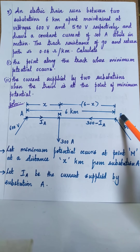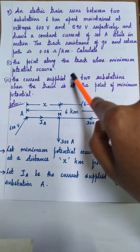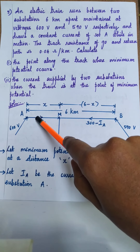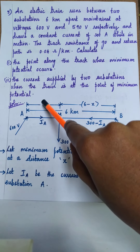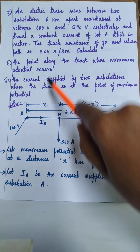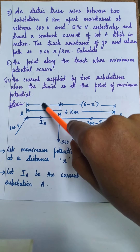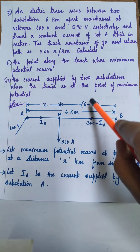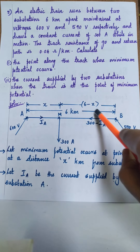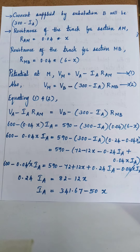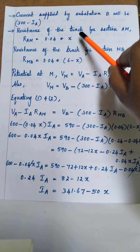Now let us calculate the resistance of section AM and section MB. The resistance is 0.04 ohm per kilometer. The distance of section AM is x kilometers, so the total resistance of section AM is 0.04 times x. Similarly, the resistance of section MB is 0.04 times (6 minus x).